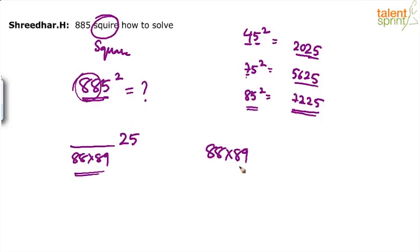For example, if you want to break 89 as 88 plus 1. If I break it as 88. All this will happen very quickly in your brain, right? Don't look at the length of the explanation. If it is 88 plus 1, what happens? 88 into 88, 88 squared plus 88 into 1 is 88. That's one way of doing it.